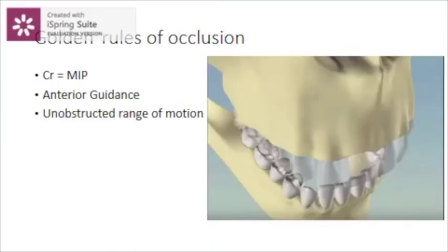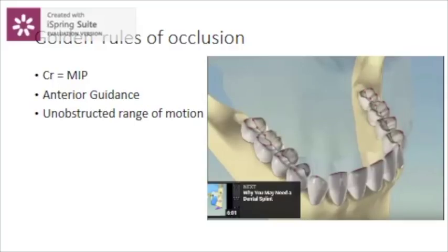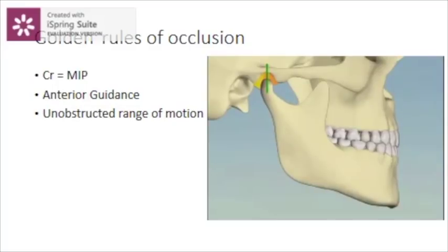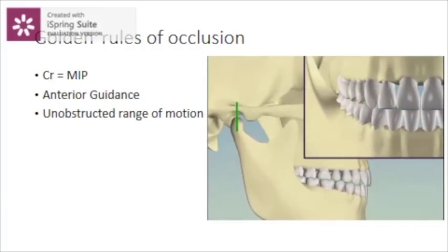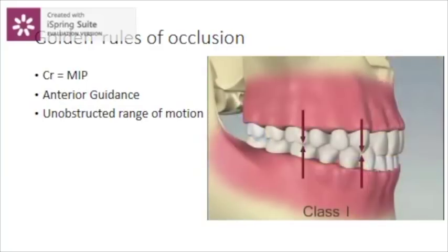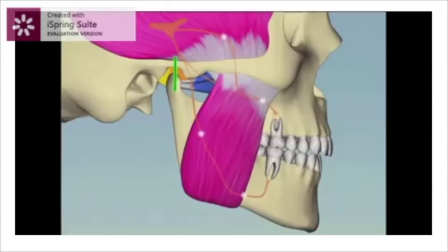There are three golden rules of occlusion: centric relation equates to maximum intercuspal position, there should be anterior guidance, and there should be an unobstructed range of motion. Centric relation is the home position of the mandible — all movements of the mandible begin and end at centric relation. It is a stable, orthopedically stable position of the joint, where the parts of the joint and muscles together are in a state of stability.